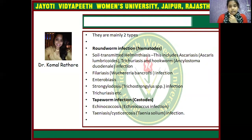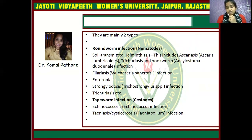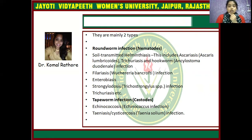There are two types: roundworm infestation — nematodes — and tapeworm infection — cestodes. Nematodes are soil-transmitted helminths and include Ascaris lumbricoides, Trichuris trichiura, and hookworm — Ancylostoma duodenale. Also included are filariasis — Wuchereria bancrofti infection — enterobiasis, Strongyloides stercoralis infection, and trichuriasis. Cestodes are tapeworm infections including Echinococcus infection and taeniasis — Taenia solium infection.